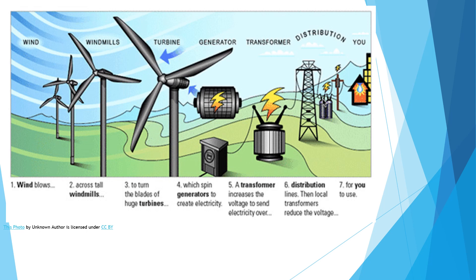By looking at this picture, we can easily understand how wind energy is converted into electricity. Here the wind is flowing, and when the wind is blown, the shaft of the windmills will rotate. When the windmills are rotating, the turbine will generate electricity. The transformer will store it and distribute it through the network for general use.